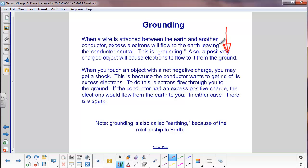Conversely, if you have net positive charge on an object, electrons will be attracted from the earth. They will come up and balance out the charge. It will stay neutral.